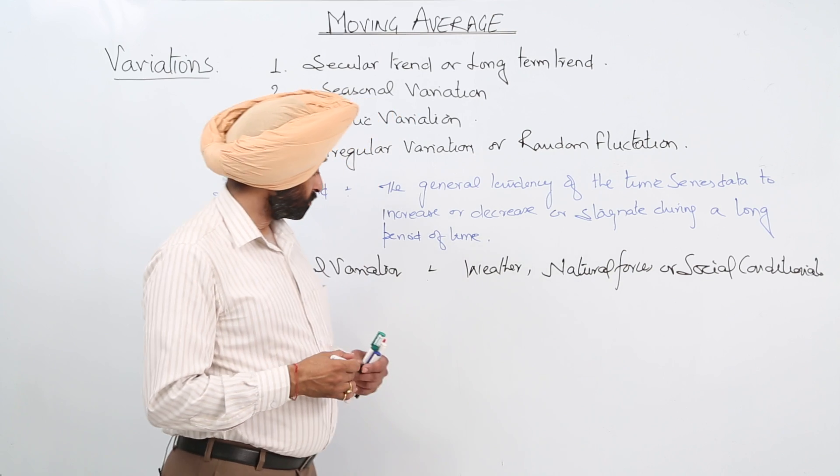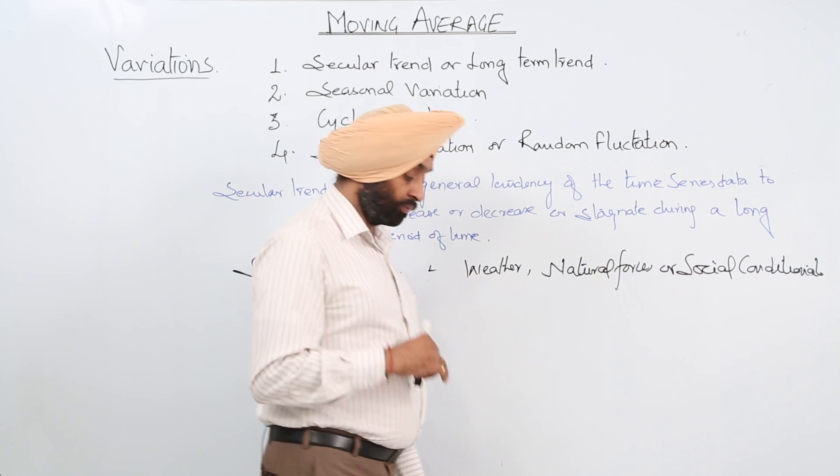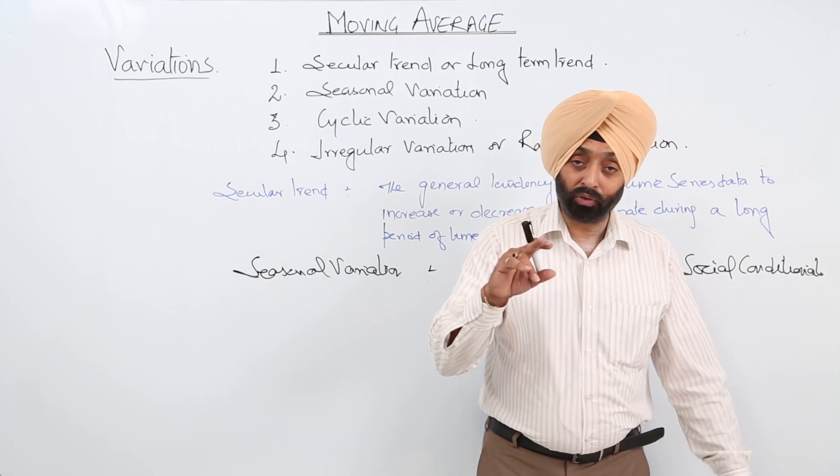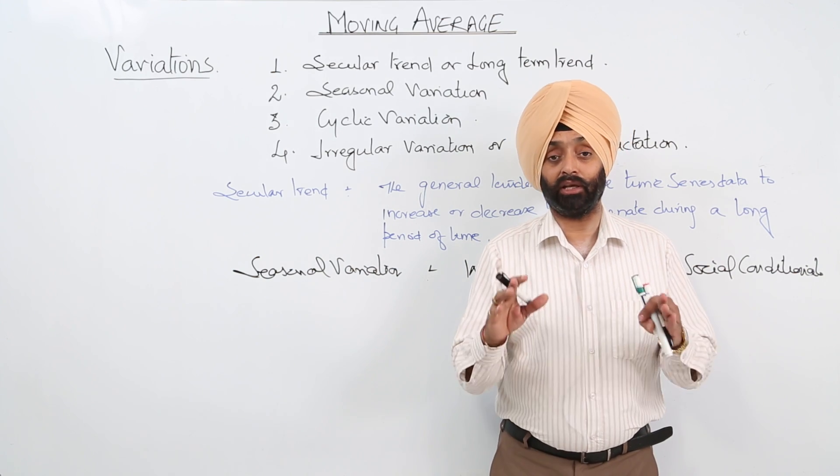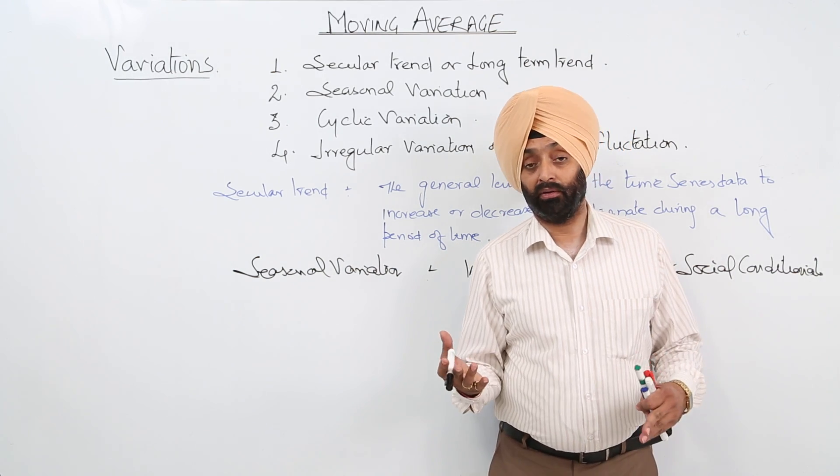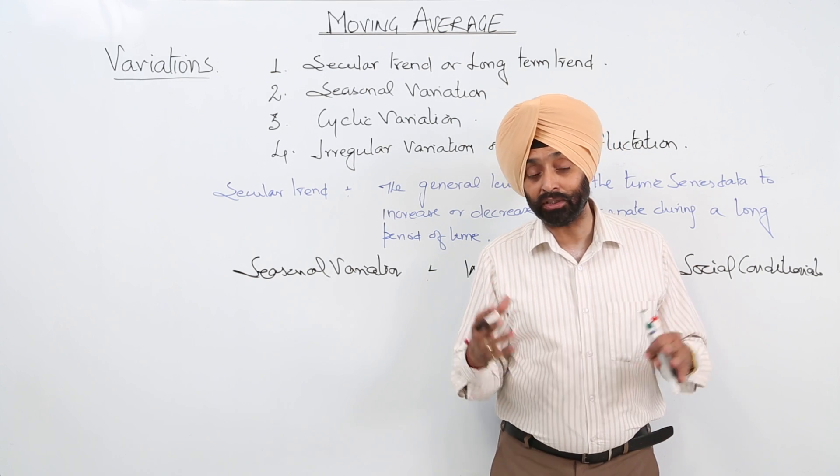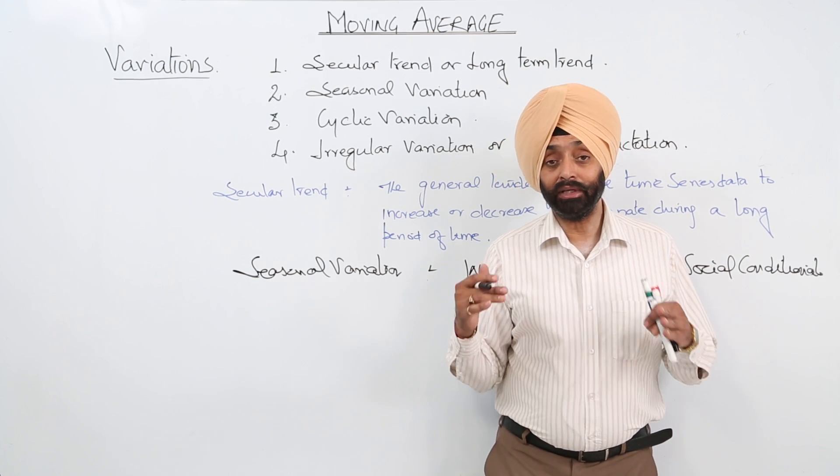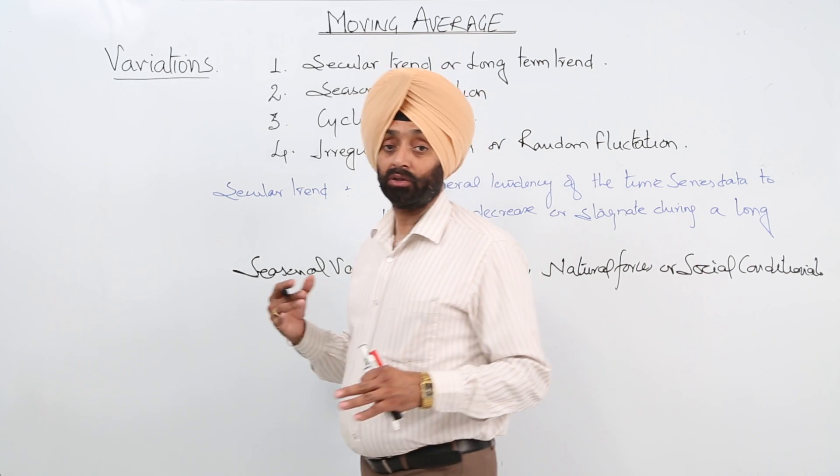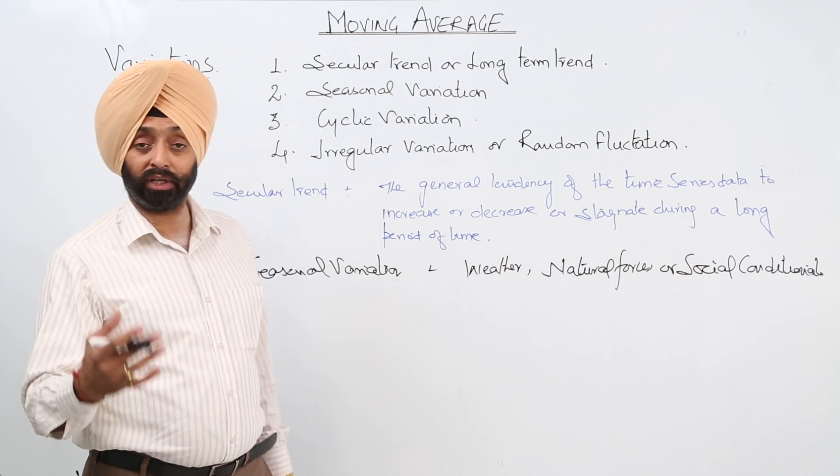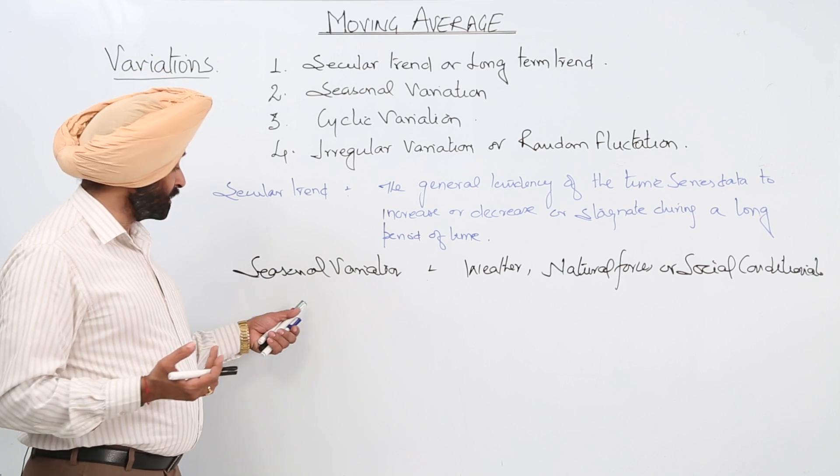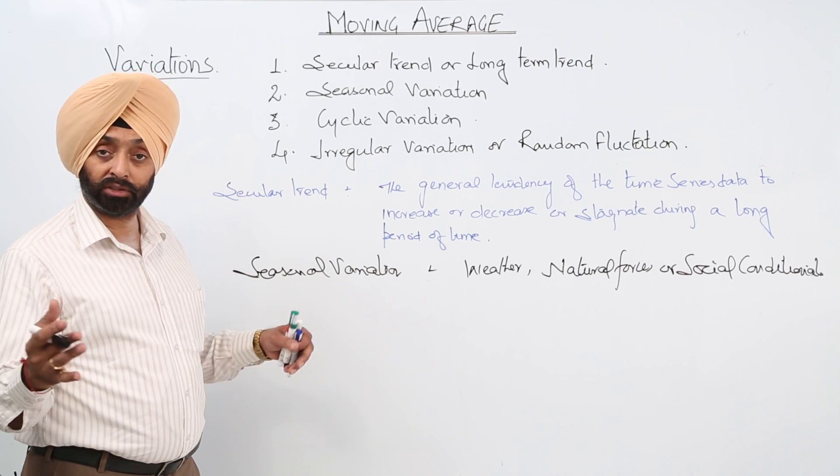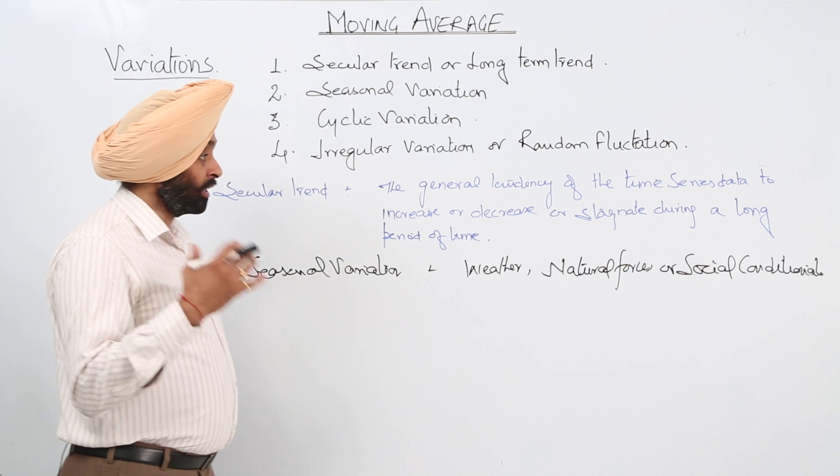Now for example, first of all weather. For the weather part what we are having? Increase of the sales of hot coffee or hot beverages in the winter. Increase in the sales of ice cream or the cold drinks in the summer. That depends on weather and it is a seasonal variation. It varies according to the season.